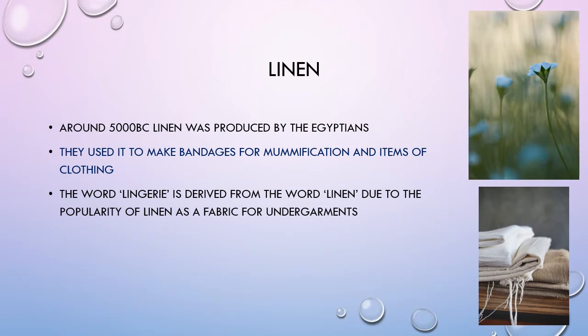Linen comes from a flax plant, and around 5000 BC linen was produced by the Egyptians. The Egyptians used it to make bandages for mummification and for items of clothing. An interesting aside is that the word 'lingerie' is derived from the word 'linen', due to the popularity of linen as a fabric for undergarments.